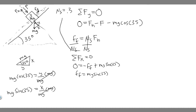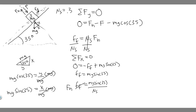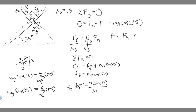Now we know the frictional force and μ sub s is given, so F sub N = frictional force / μ sub s = mg·sin(35°) / μ sub s. Now we can solve for F. Adding F to the other side of our y-equation: F = F sub N − mg·cos(35°). Plugging in F sub N: F = [mg·sin(35°) / μ sub s] − mg·cos(35°).